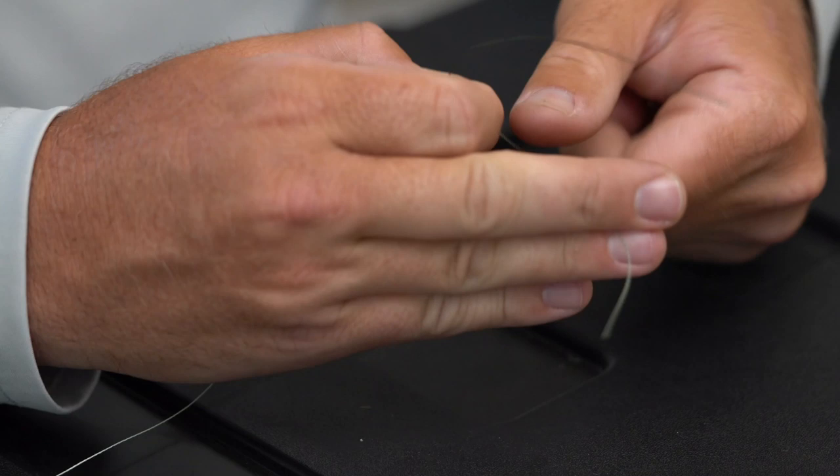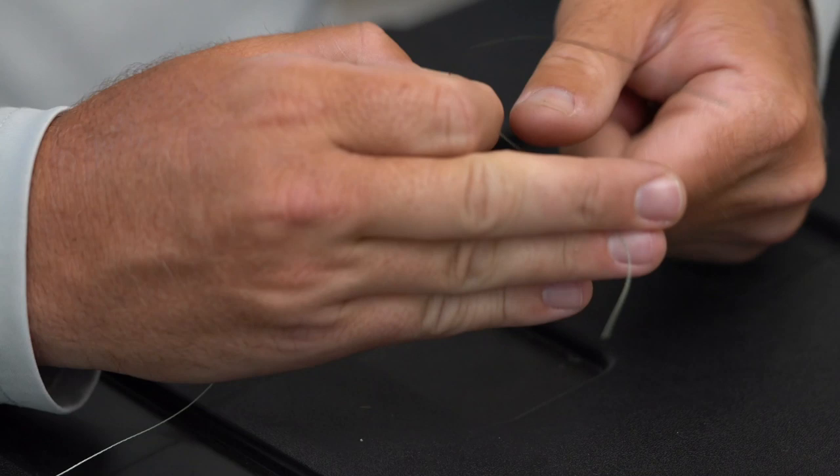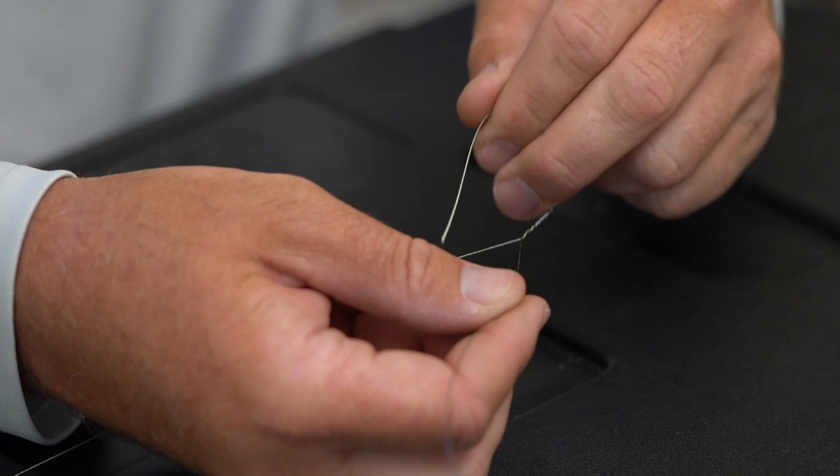Now this line is going to go nine loops up this way. This line, nine loops the opposite direction. So we'll go this one first. One, two, three, four, five, six, seven, eight, nine. And I lay it back through that middle point that I'm holding. And then I hold it again.